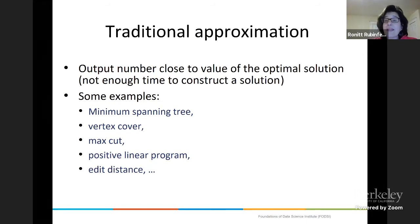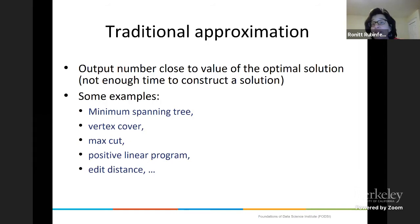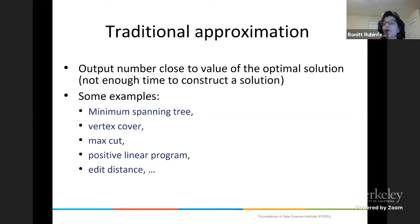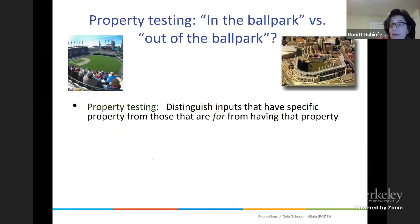In the approximation model, the data is some kind of graph, linear program, large string, or large function description. What you want to output is some number that's close to the value of the optimal solution, but you don't have enough time to construct a solution. For example, you might estimate the minimum spanning tree, vertex cover, max cut, or solution to a positive linear program. Given two large strings, you may want to estimate their edit distance. These are all things you might want to do in sublinear time — and can be done.